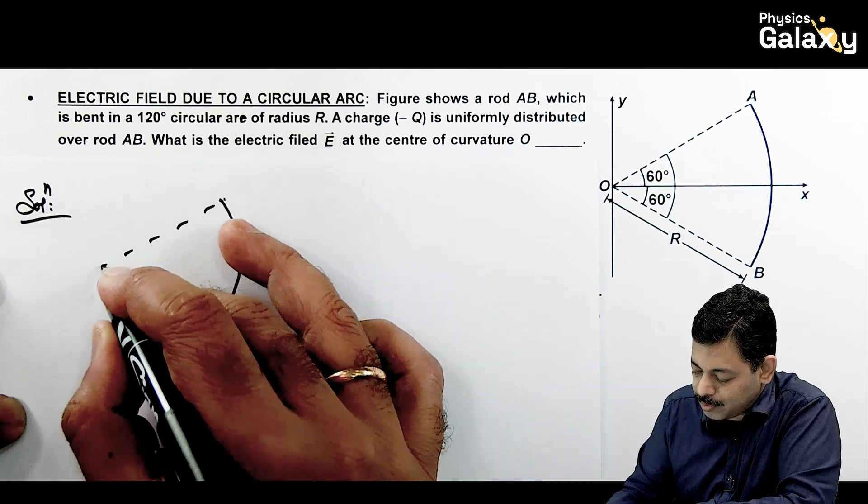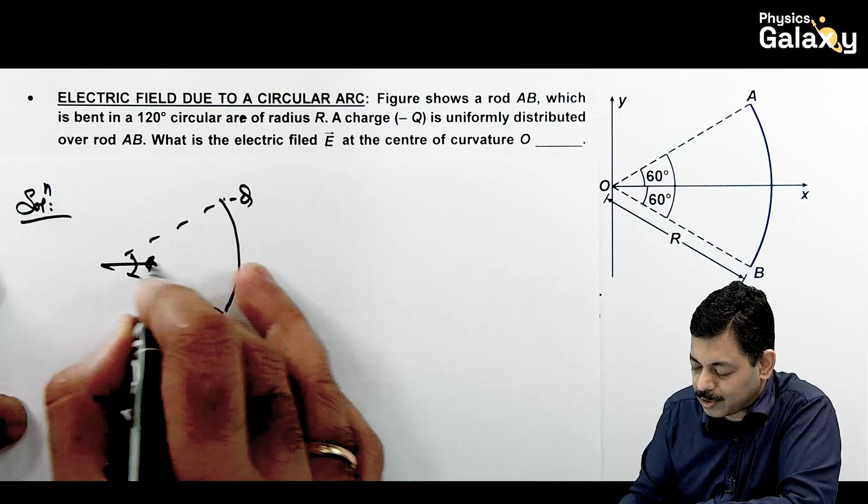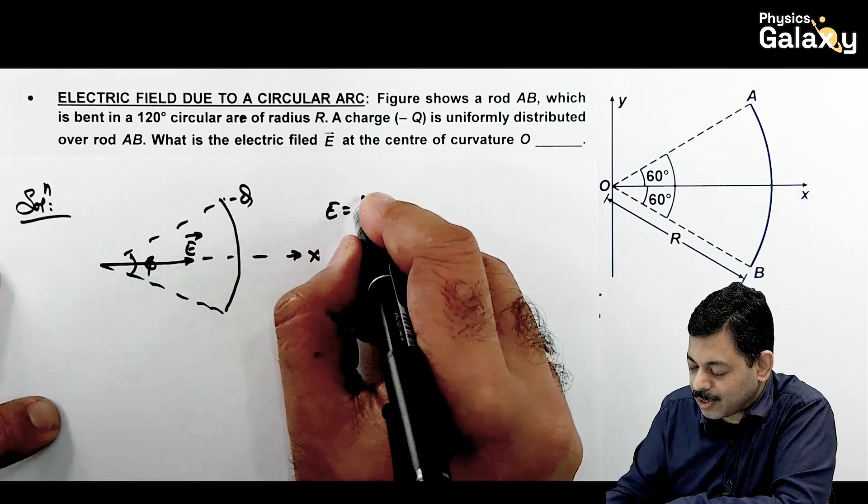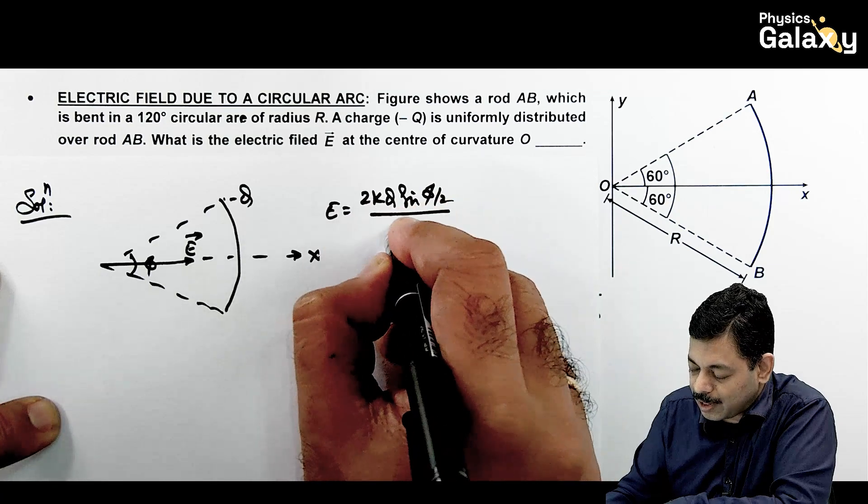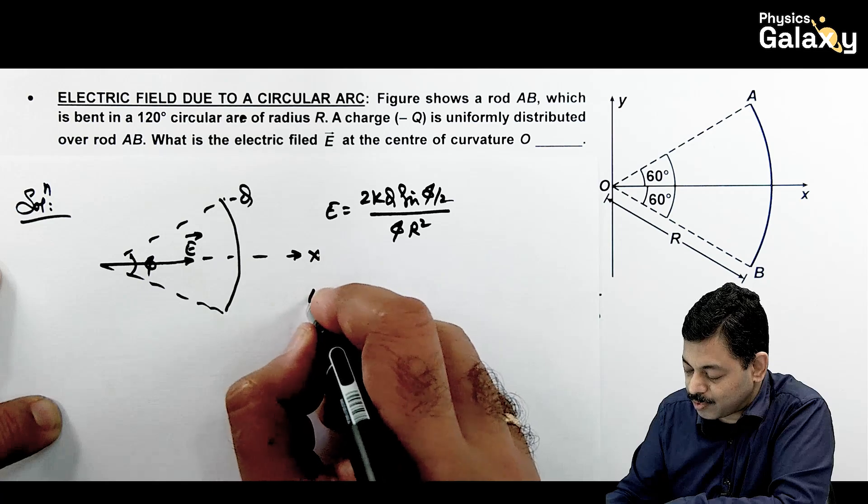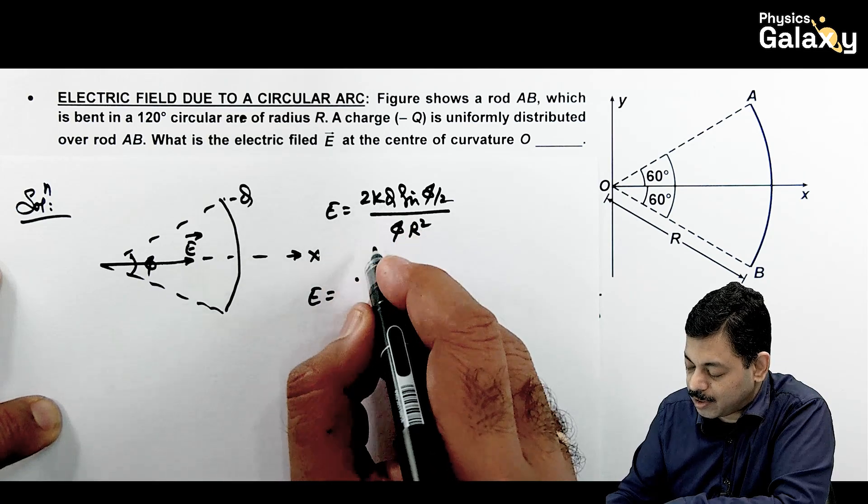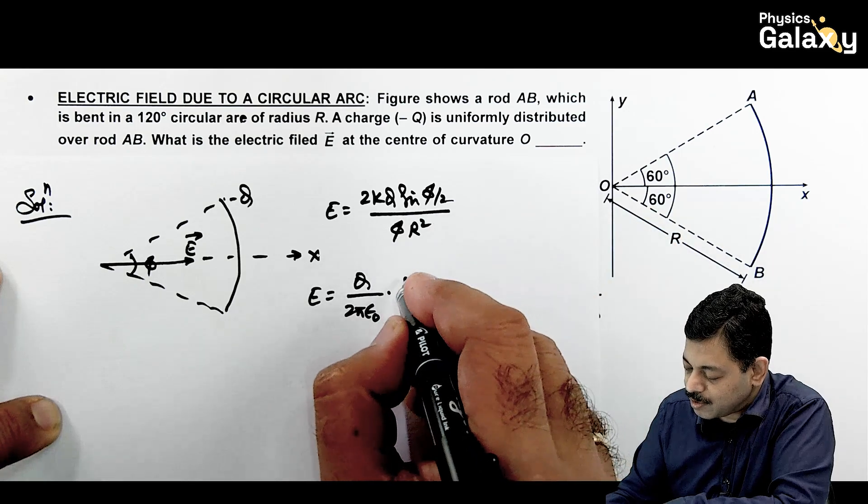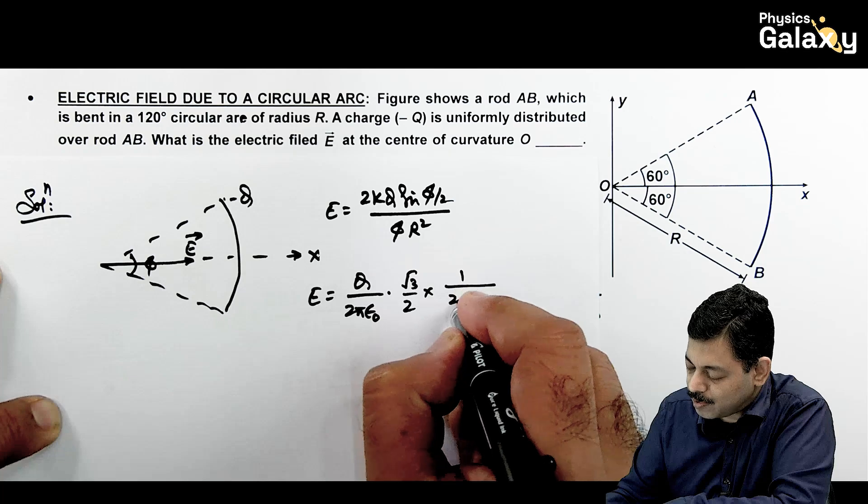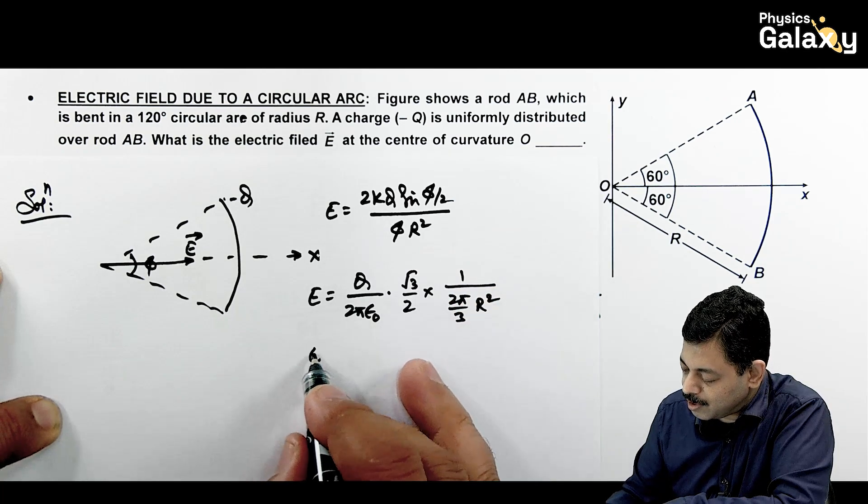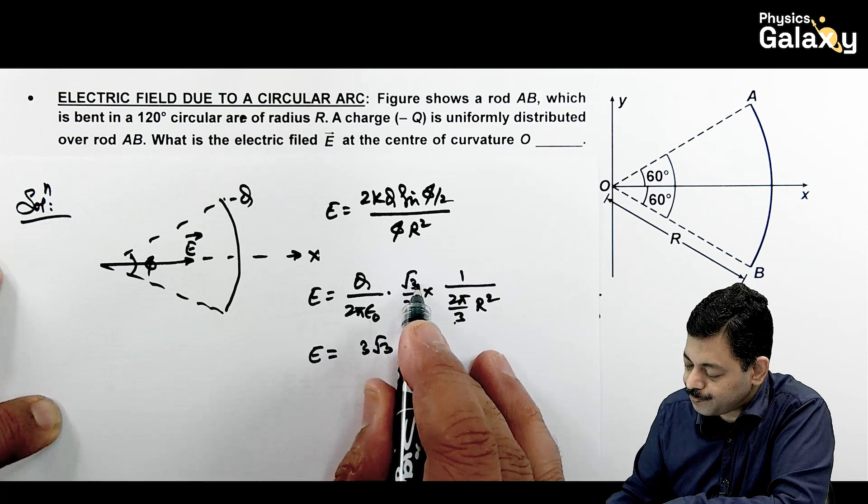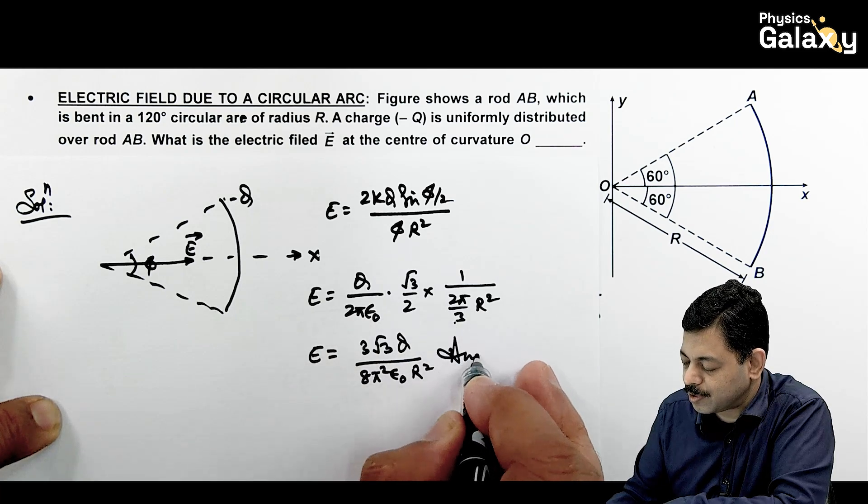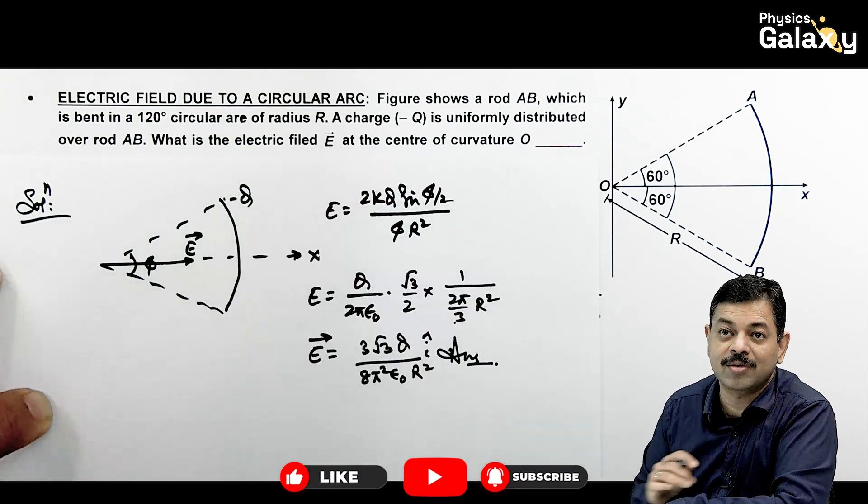Now in this case, the electric field expression we can directly use: 2KQ sin phi by 2 upon phi R square, where phi is the angle subtended. So I will directly use this result here. K can be written as 1 by 4 pi epsilon naught, this is Q by 2 pi epsilon naught multiplied by sin 60 degrees. Phi angle is 120, so sin 60 will be here, root 3 by 2, into 1 upon phi R square, so this is 2 pi by 3 into R square. So if I use the result, then the value of E can be written as 3 root 3 Q divided by, 2, 2, 2 is 8 pi square epsilon naught R square. That is the result of this problem multiplied by you can write as i cap, because question is asking the vector of electric field.